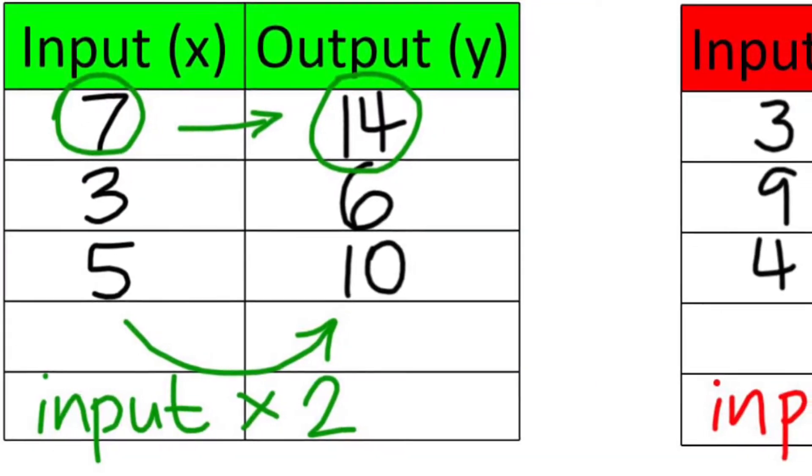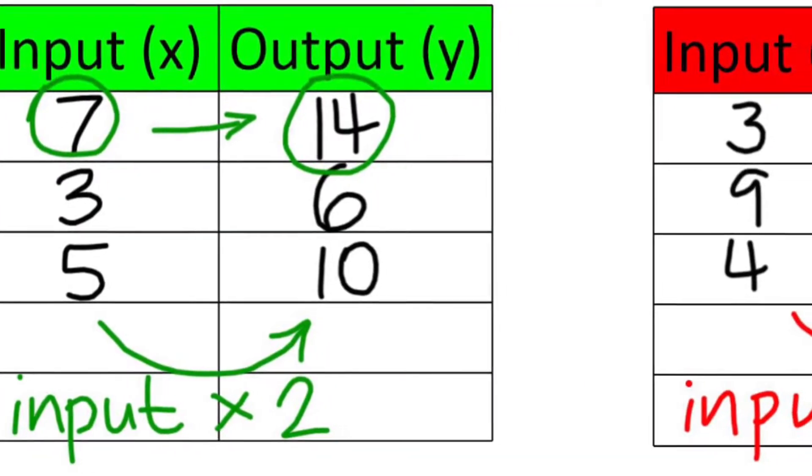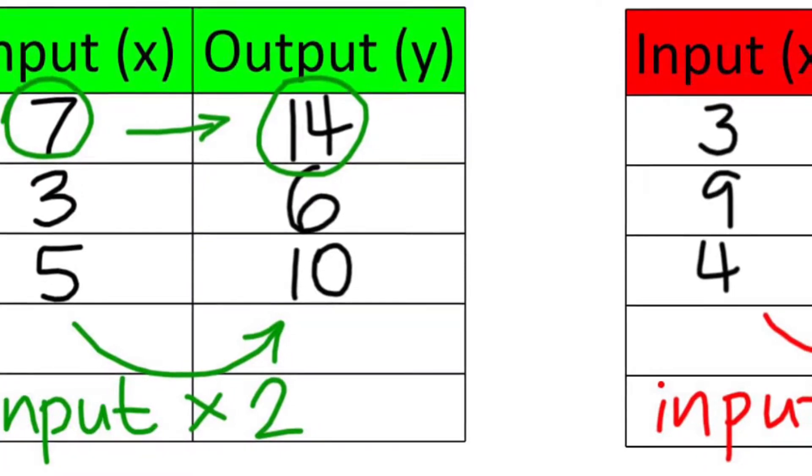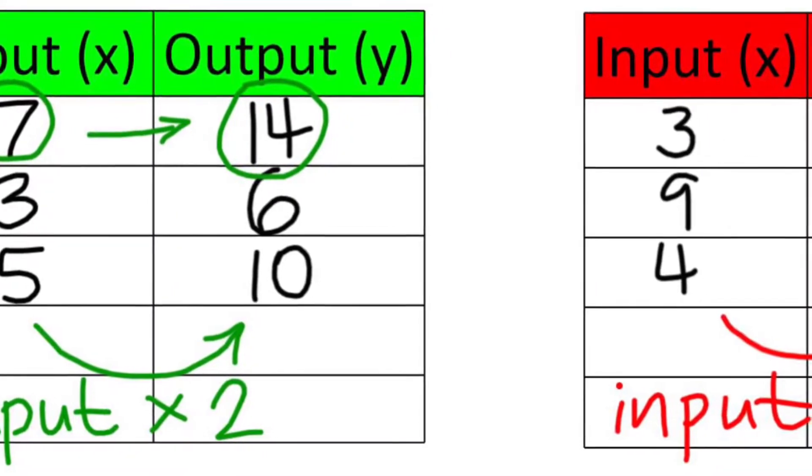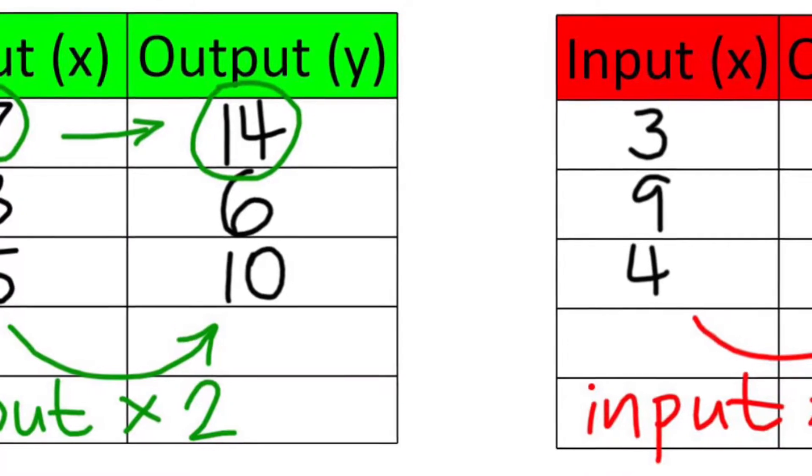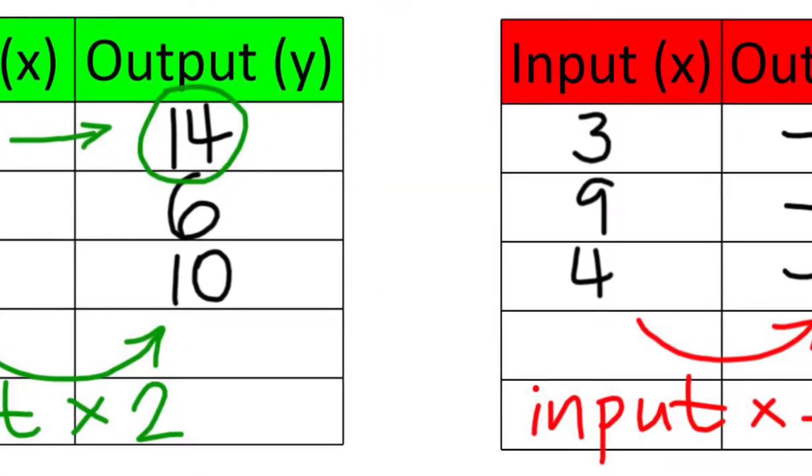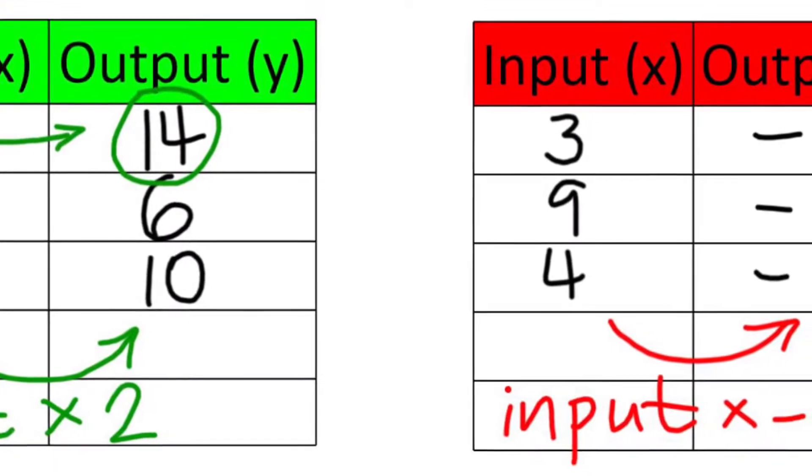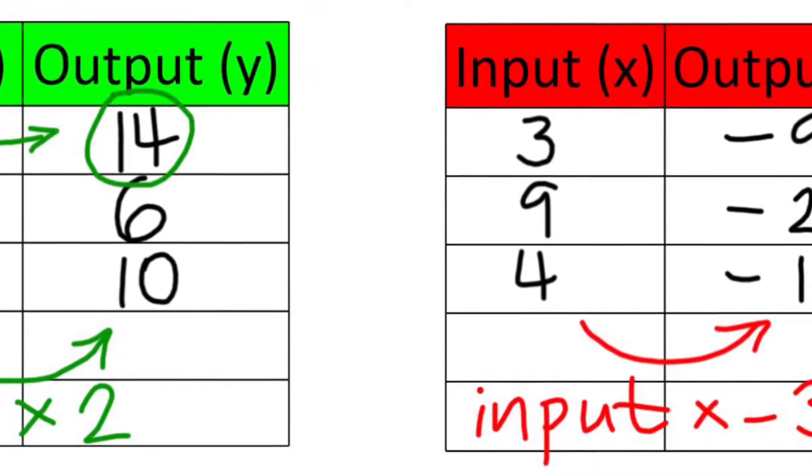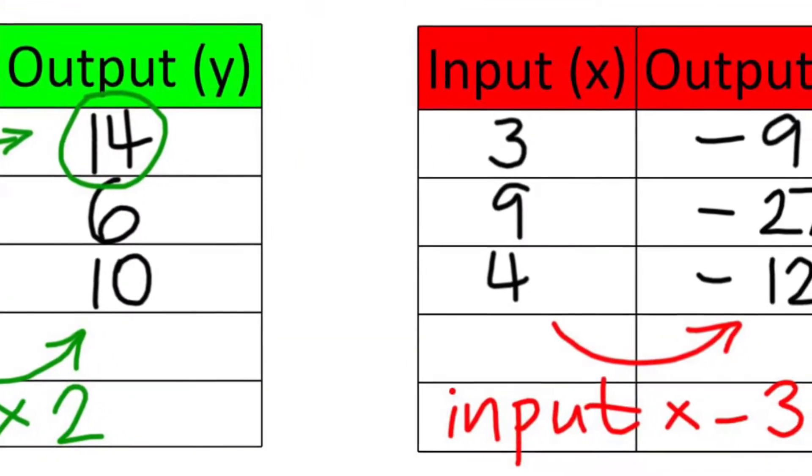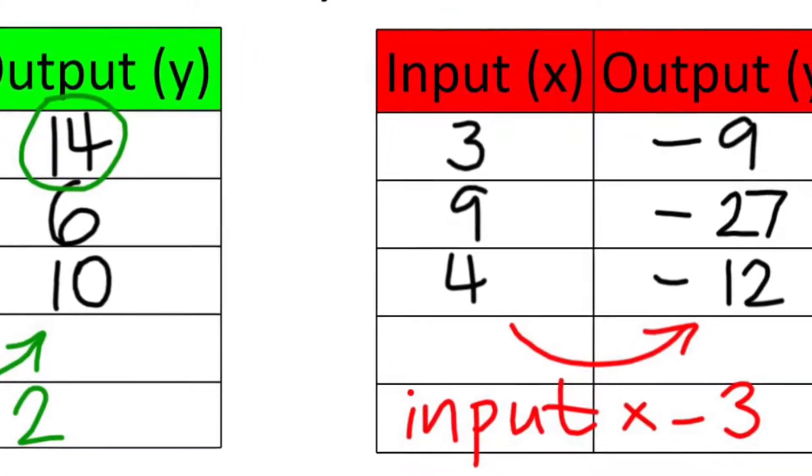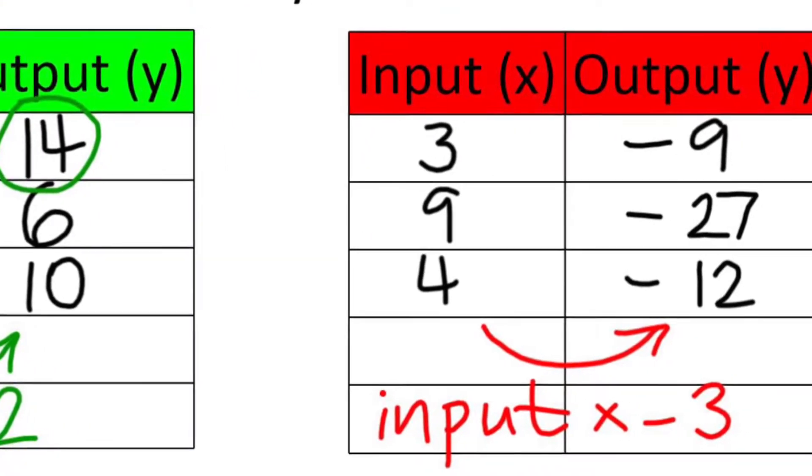The resource begins with a game of guess my pattern where students give inputs in an unordered way, so seven, then three, then five. The teacher thinks of a rule and tells the students what the output is. The students guess what the rule is, and the idea is to really encourage students to be thinking about the relationship between each input and each output across the table rather than just focusing on those first differences down the table.